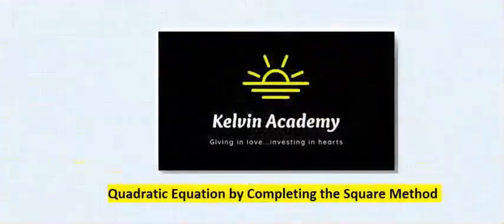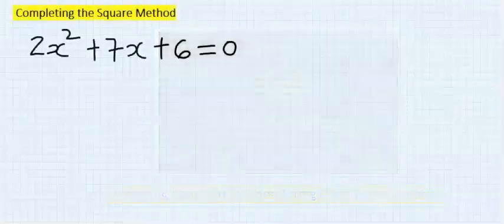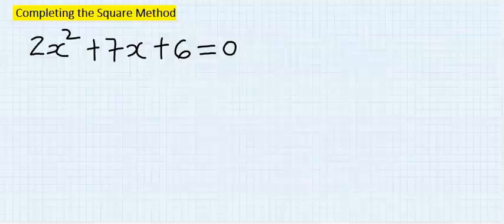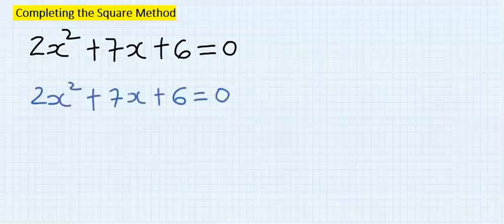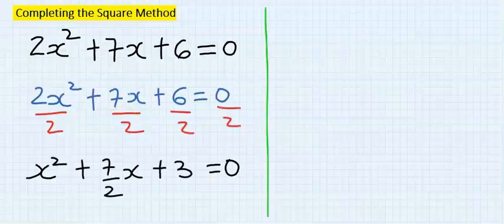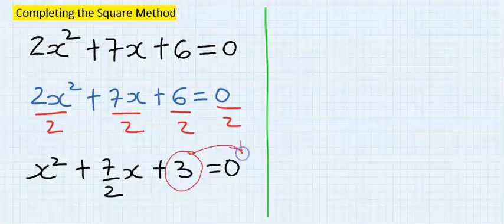We will use the completing the square method to solve this problem. Step number one: divide the equation by the coefficient of x squared. The coefficient of x squared is two.